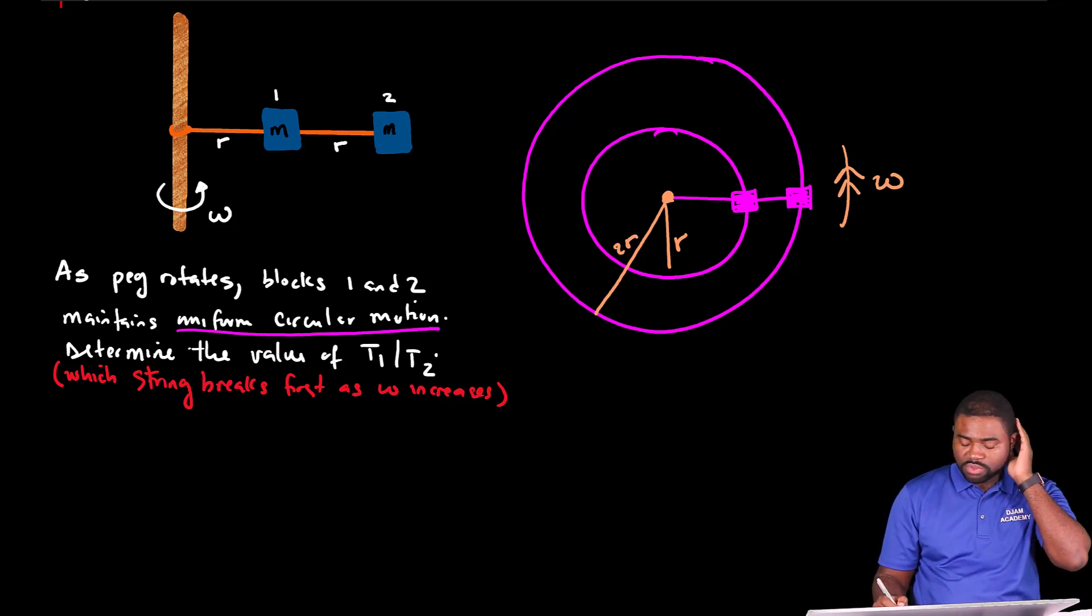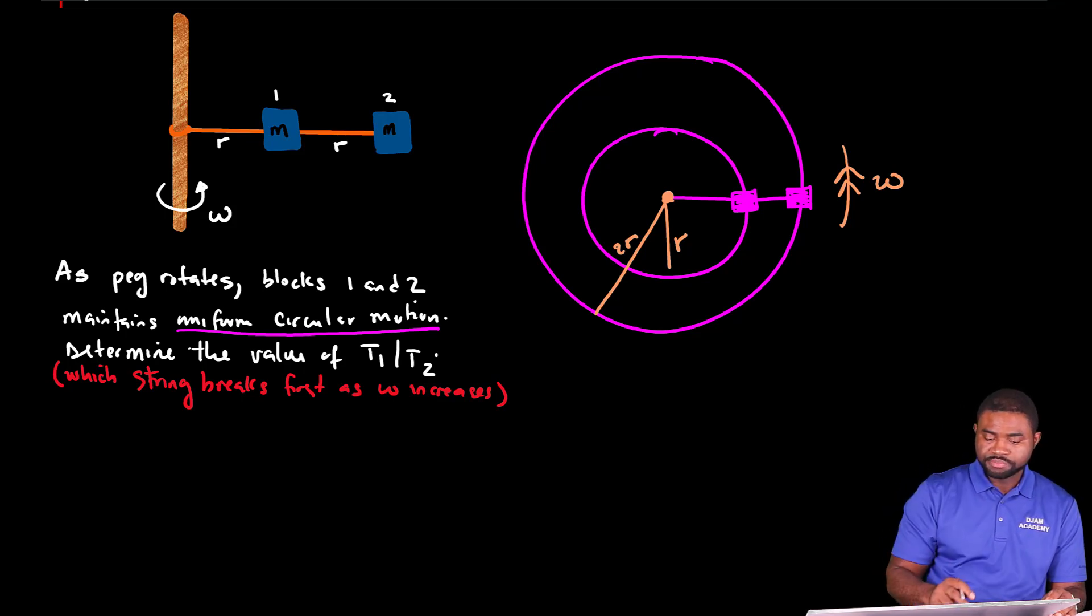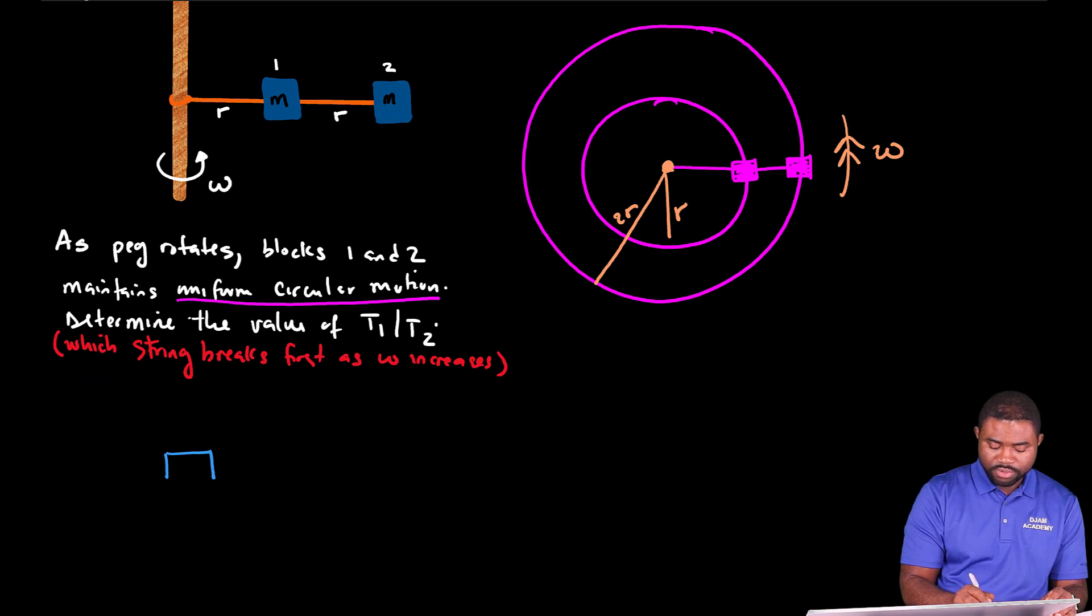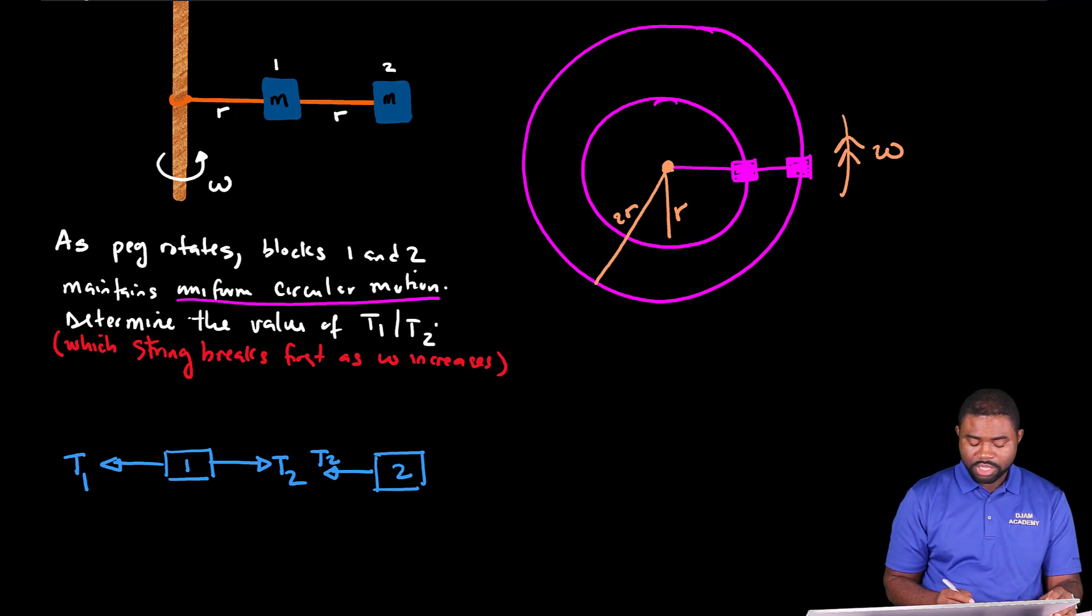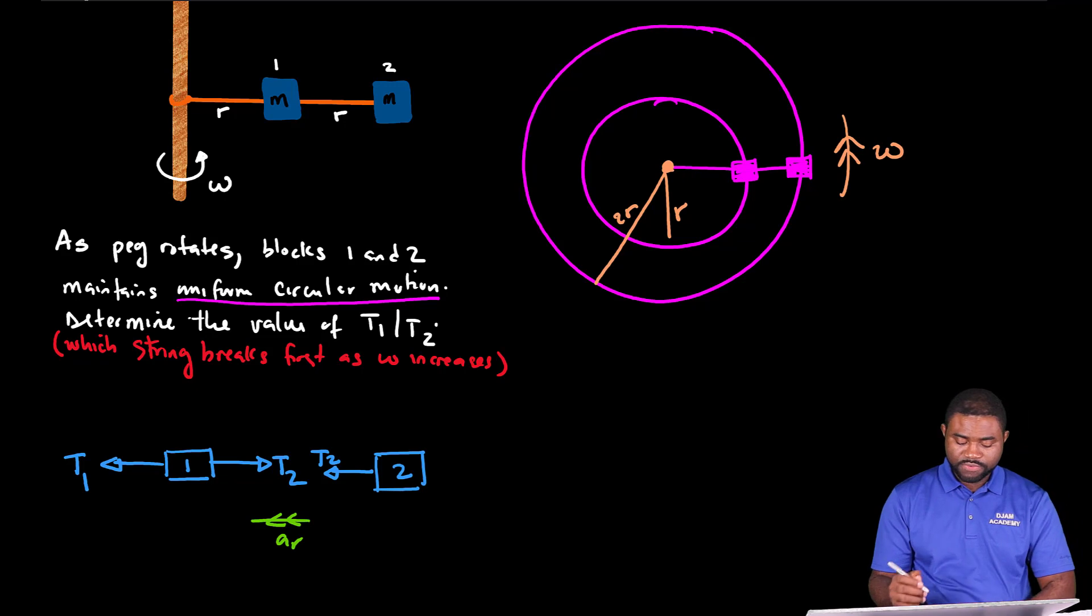Now we are required to calculate the ratio between the tensions in the string. So let's first begin by doing a free body diagram. We have here, this is block one and this is block two. There is a tension T2, and there is a tension in this direction T1. Now remember that the direction of the centripetal acceleration is directed inwards.